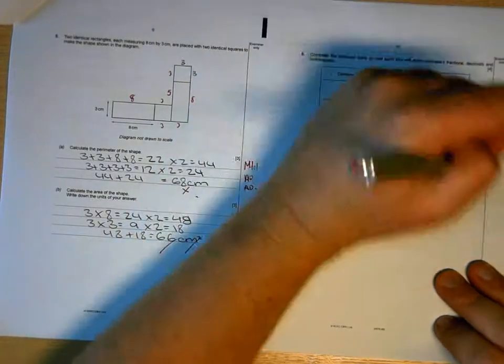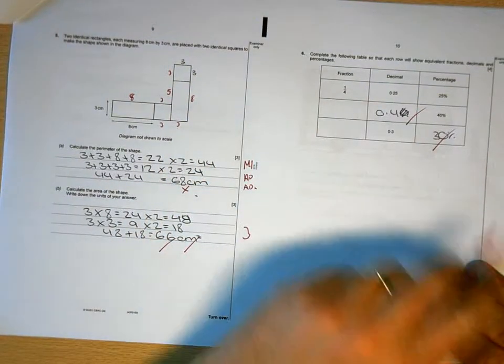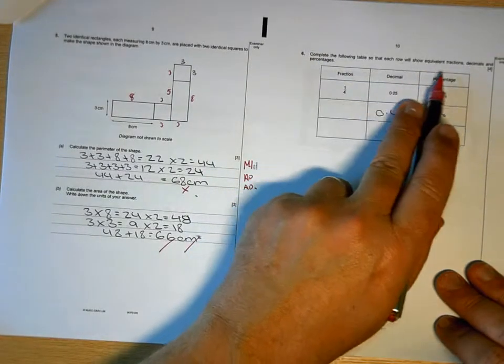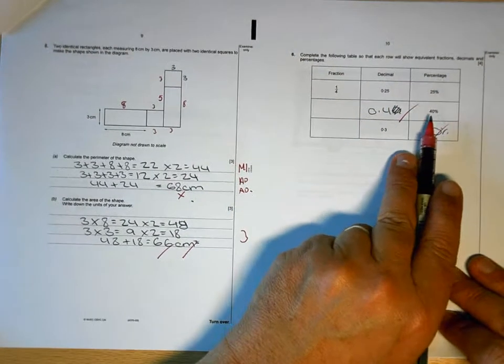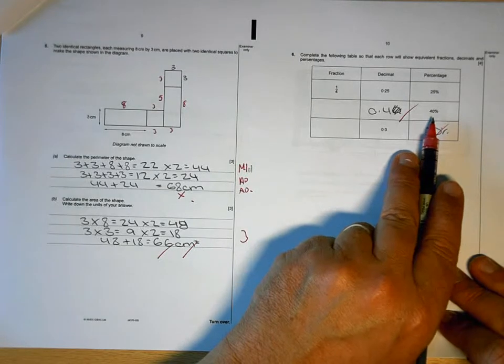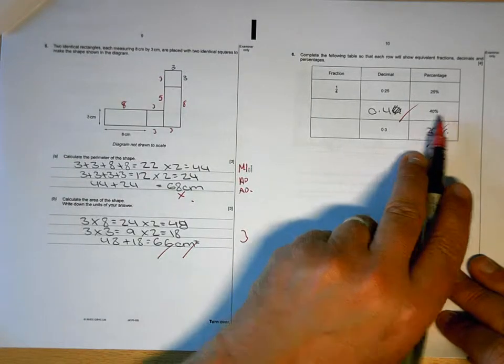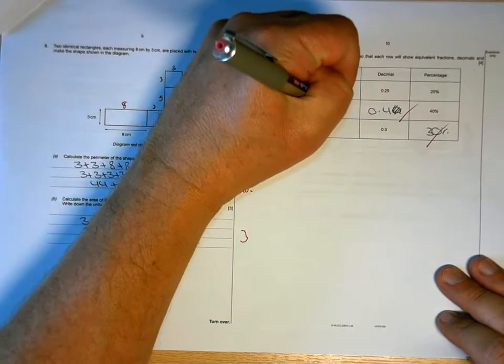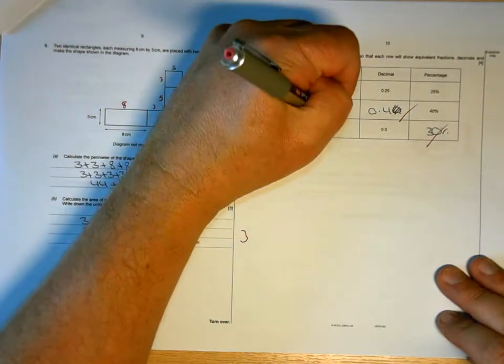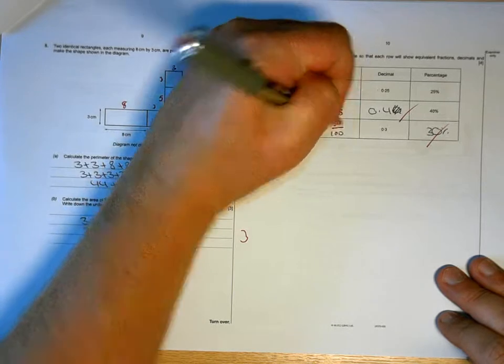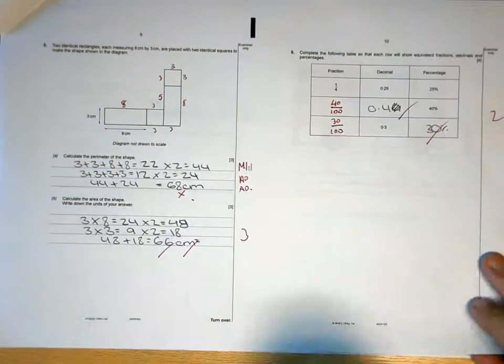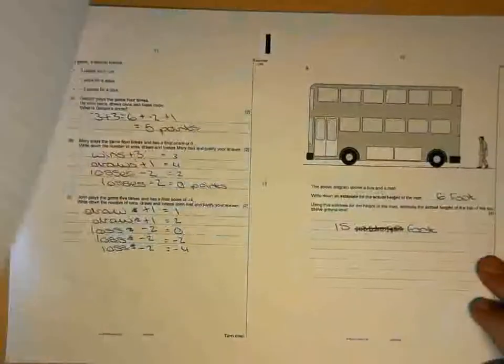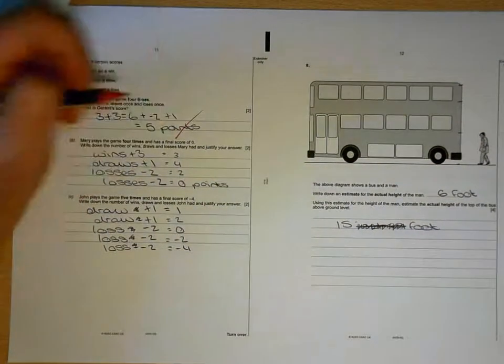0.4 is fine, 30% is right. So to write these as fractions, they're not asking you to show them in their simplest form. So any percentage to write it as a fraction you just put it over a hundred. So 40% means 40 per hundred, 30 per hundred. So two out of four there will mean you get six on that page.